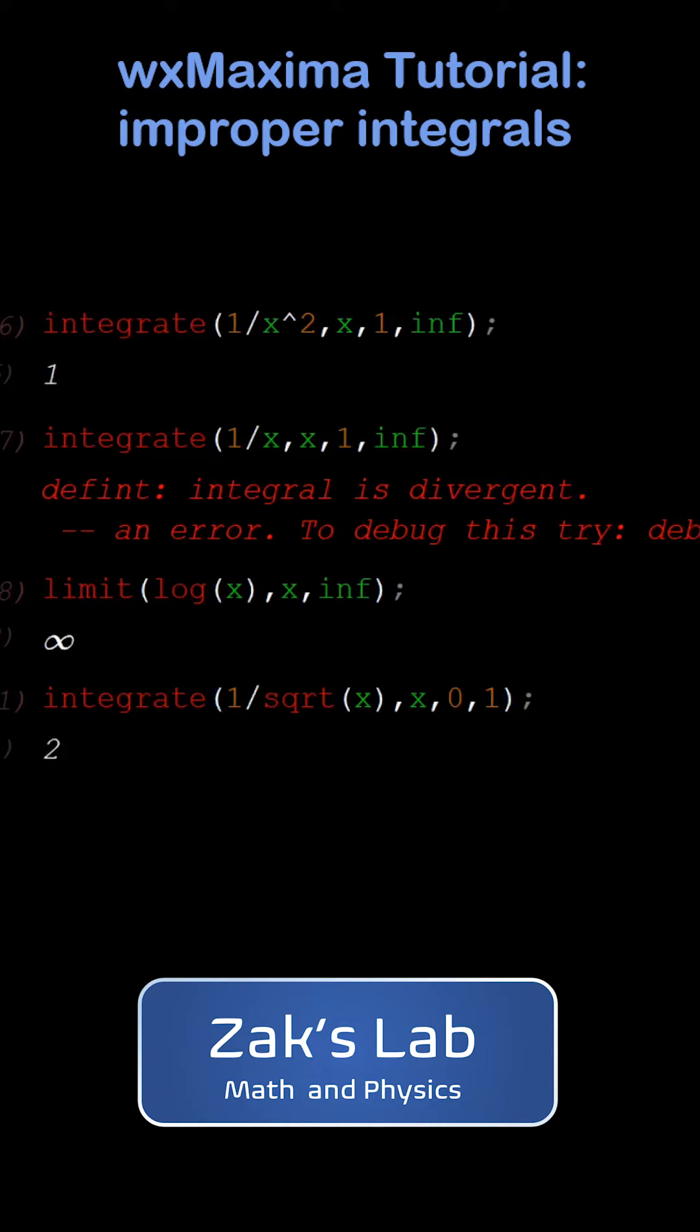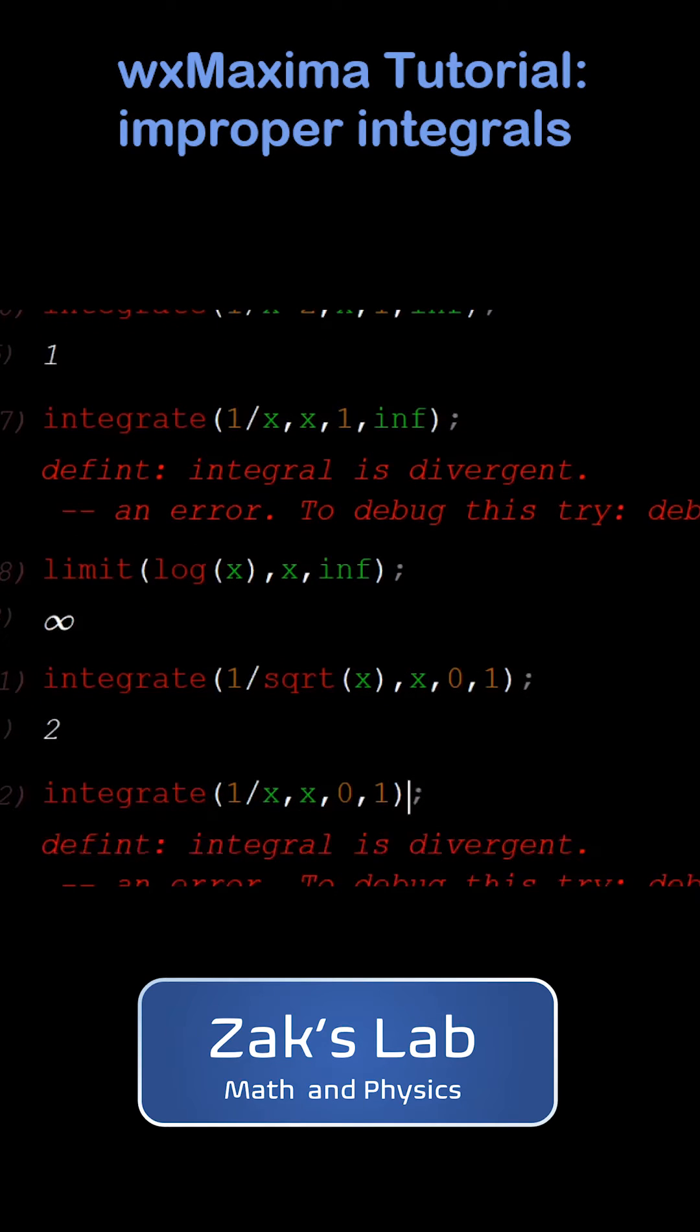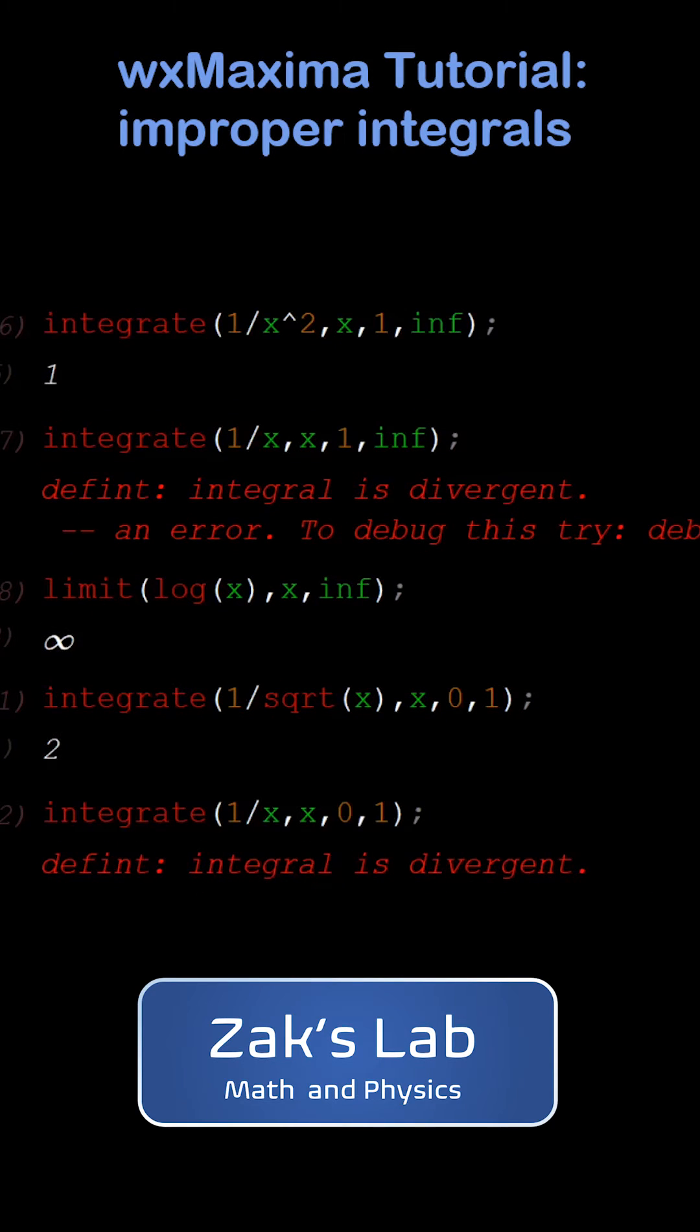It turns out the area is 2. If we try the same thing with a function that blows up at x = 0 but doesn't contain finite area, Maxima is going to tell us that integral diverges—in other words, it becomes infinite. If we want to get a better answer than just that this thing is divergent, if we want to understand is it plus infinity or minus infinity, we have to think about how the integral is computed.